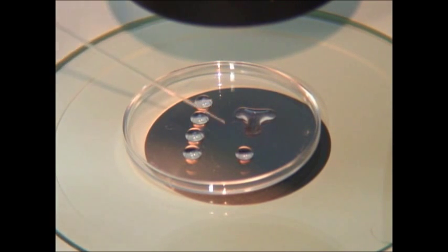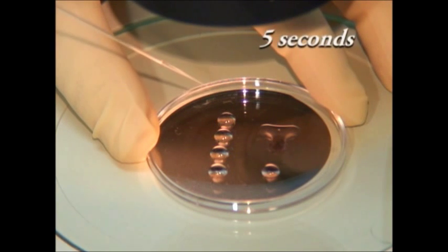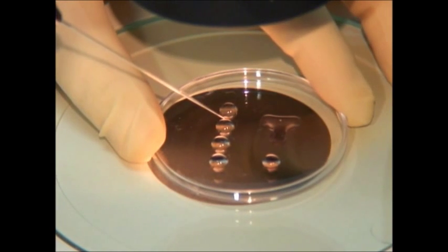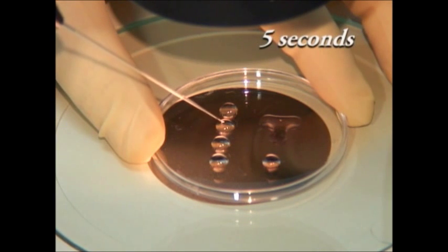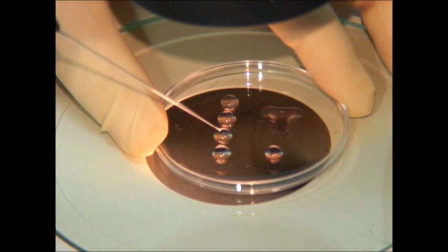During this time, four 20 microliter drops of vitrification solution is allocated in the bottom part of the dish. Next, the eggs are prepared from the third drop of equilibration solution and rinsed in the four vitrification solution drops - five seconds in the first drop, five seconds in the second drop, 10 seconds in the third drop, and then transferred into the fourth drop.